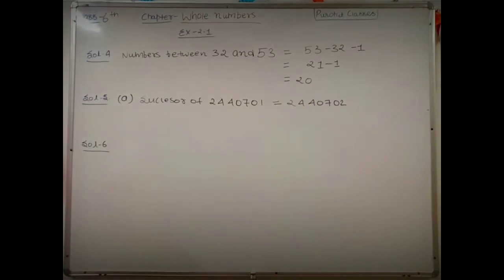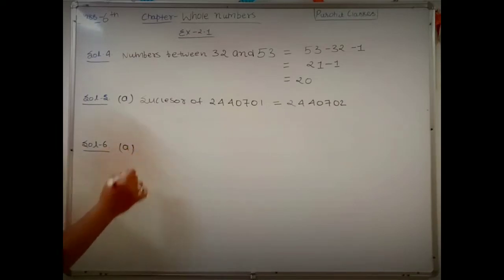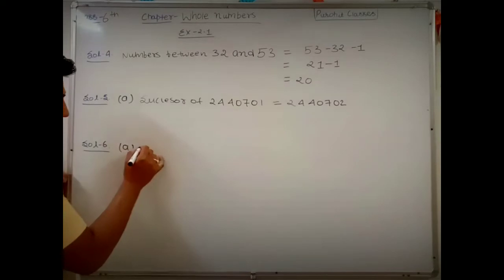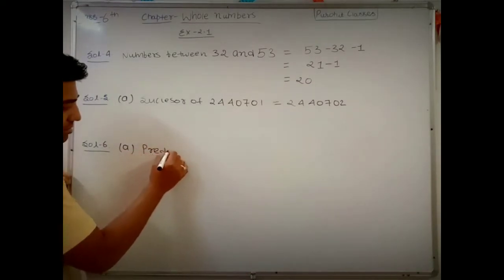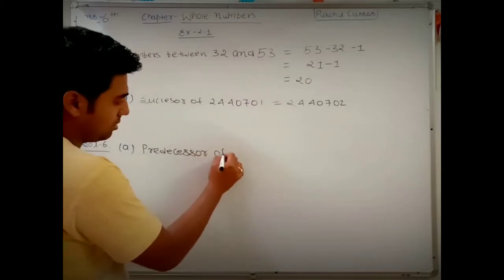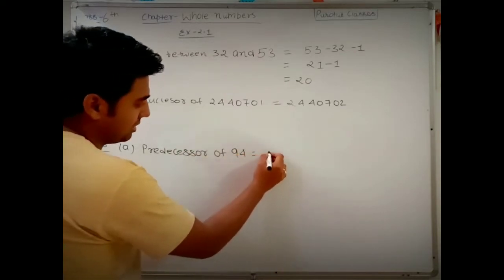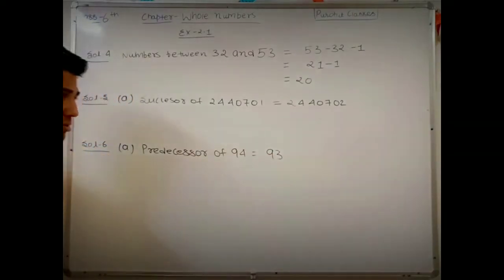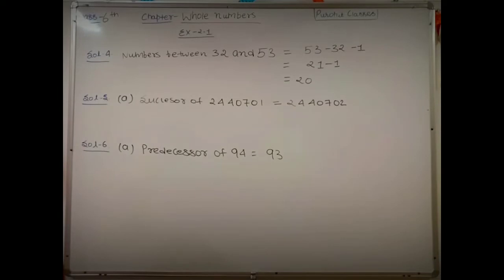Question 6 asks for the predecessor. Part a: predecessor of 94. The predecessor is given by subtracting 1, so 94 minus 1 equals 93. The predecessor of 94 is 93. The remaining three parts you can solve yourself.